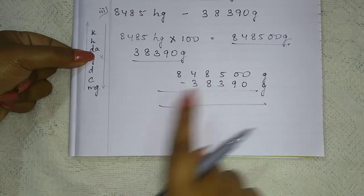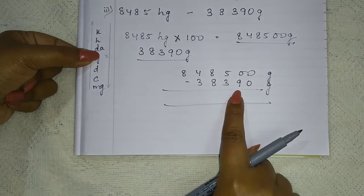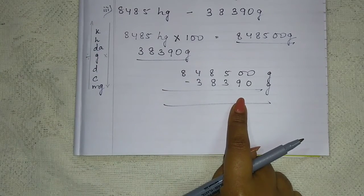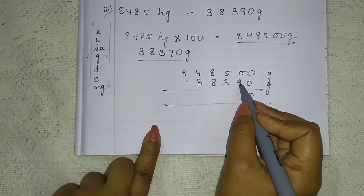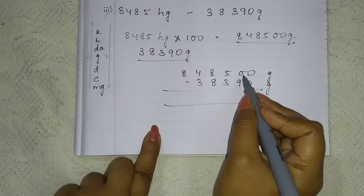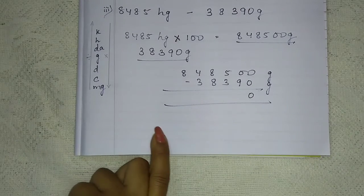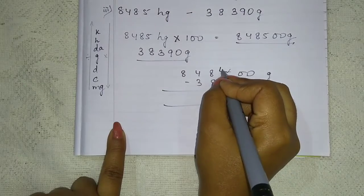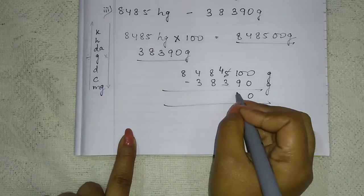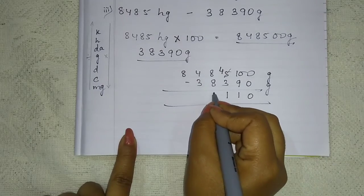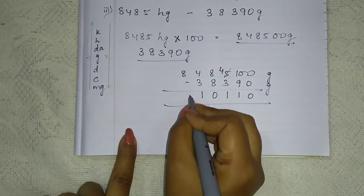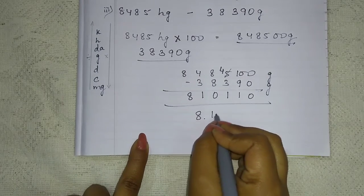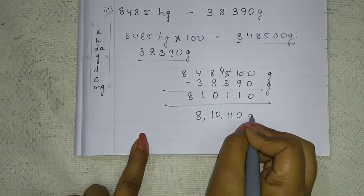Now subtract: 0 minus 0 is 0. 0 minus 9, we need to borrow. 10 minus 9 is 1. 8 minus 8 is 0. 4 minus 3 is 1. And 8. So here we have got the answer: 810110 gram.